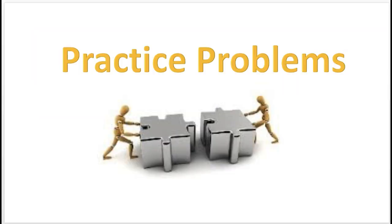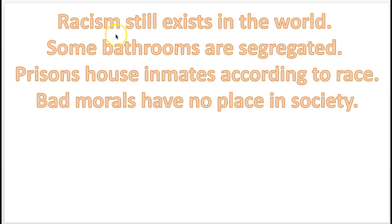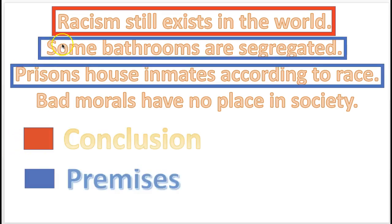Now let's try a practice problem. 'Racism still exists in the world. Some bathrooms are still segregated. Prisons house inmates according to race. Bad morals have no place in society.' Press pause and identify the premise and the conclusion. The conclusion is in the red and the two premises are in the blue. Notice the last statement is not part of the argument — it's just a passing comment.